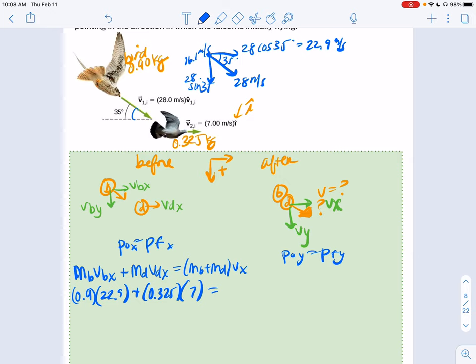And then their combined mass is both of them together because they're stuck together, 1.225 VX. Let's just get all these numbers out of the way. 22.9, 20.61 plus 0.325 times 7, 2.275. Plus 20.61 and then divided by the mass, VX is going to be 18.7 meters per second.